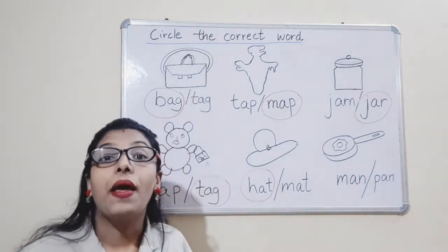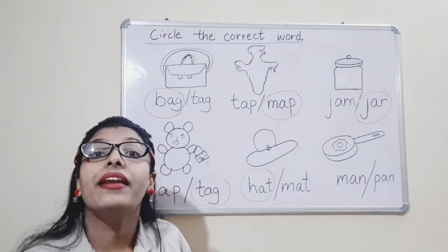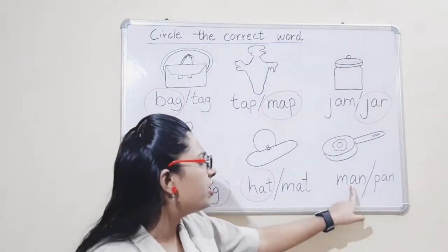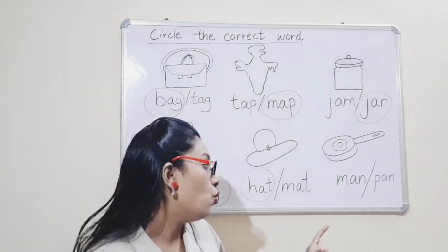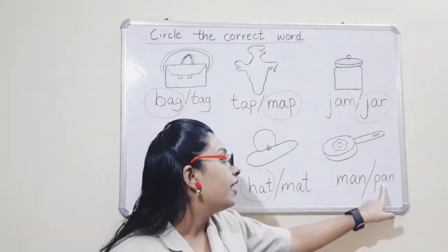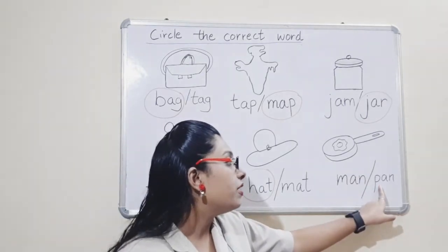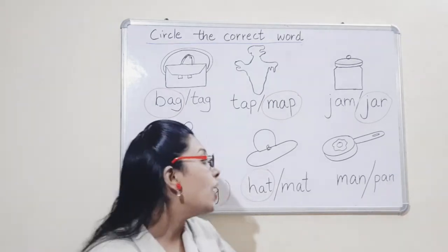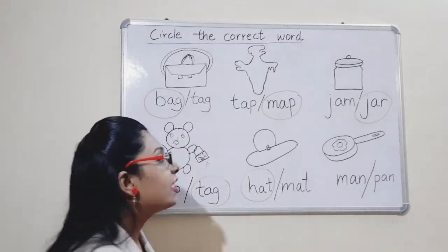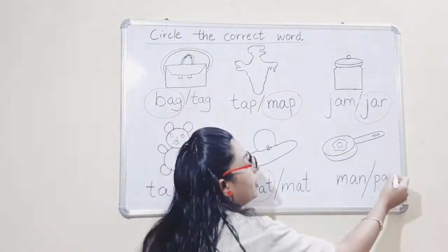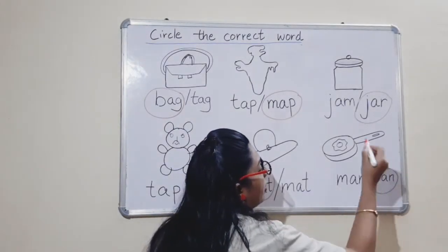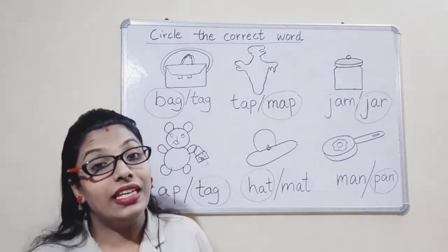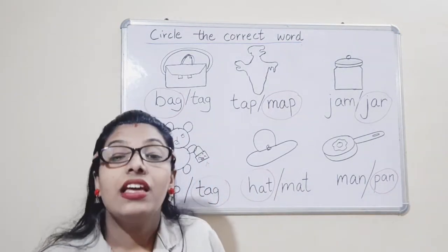Now the next picture is pan. P-A-N. Is this P-A-N? No. Is this P-A-N? No. Is this P-A-N? Yes. So we will circle it — P-A-N. So this is how we did the first exercise.